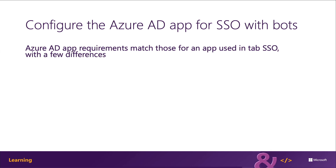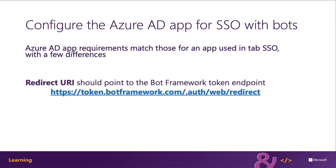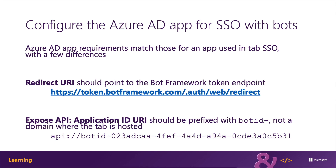Bots have some unique characteristics due to their server-side interactive experience compared to the client-side nature of tabs. For example, the redirect URI for the app should point to the Azure Bot Framework's token endpoint, such as token.botframework.com/auth/web/redirect. Also, when exposing an API permission such as access-as-user, the App ID URI should include the string "bot ID dash" instead of the domain name, making it look like: api://botid-{GUID of the app}.